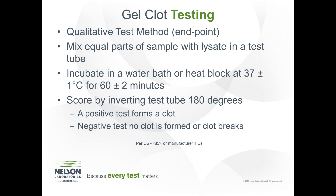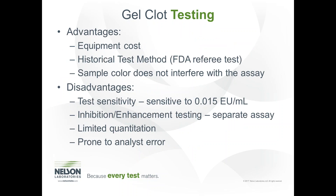The gel clot test was the first that was developed. It is a qualitative test rather than a quantitative test, and it's relatively straightforward. You mix equal parts of the lysate and the sample extract in a test tube and incubate at 37°C ±1 for 60 ±2 minutes, then score the test by inverting the test tube 180 degrees. If the clot forms, it's positive; if the clot breaks, it's negative. Advantages include low equipment cost, it is considered the FDA's historical referee test, and sample color does not interfere. Disadvantages include limited sensitivity, inhibition enhancement testing required for validation is a separate assay, limited quantitation, and it is prone to human error, as analysts inverting test tubes can accidentally break the clot.